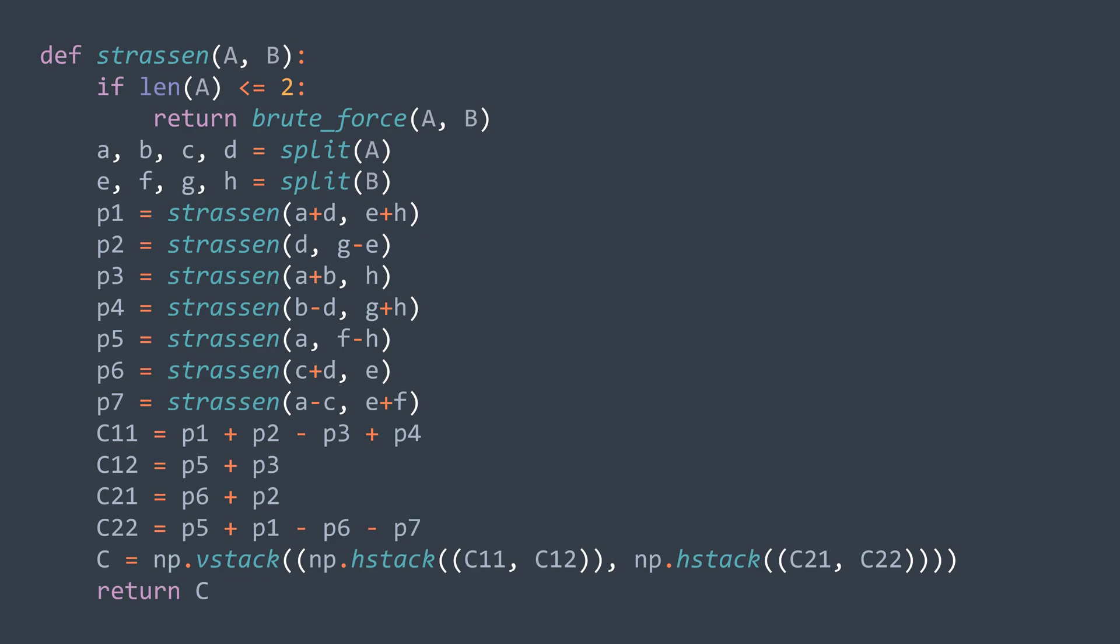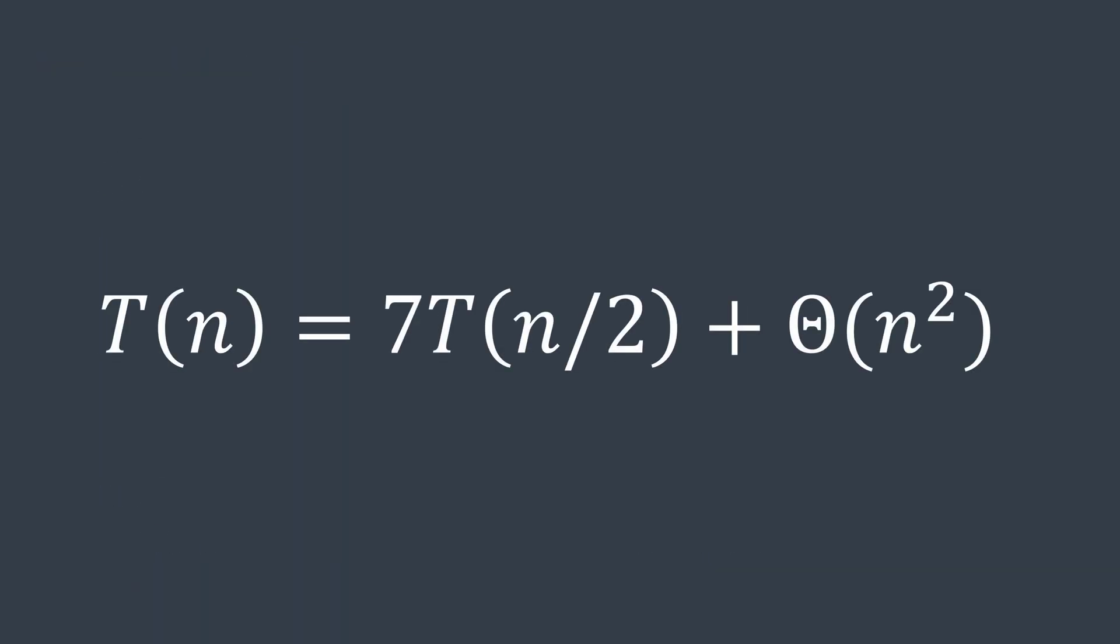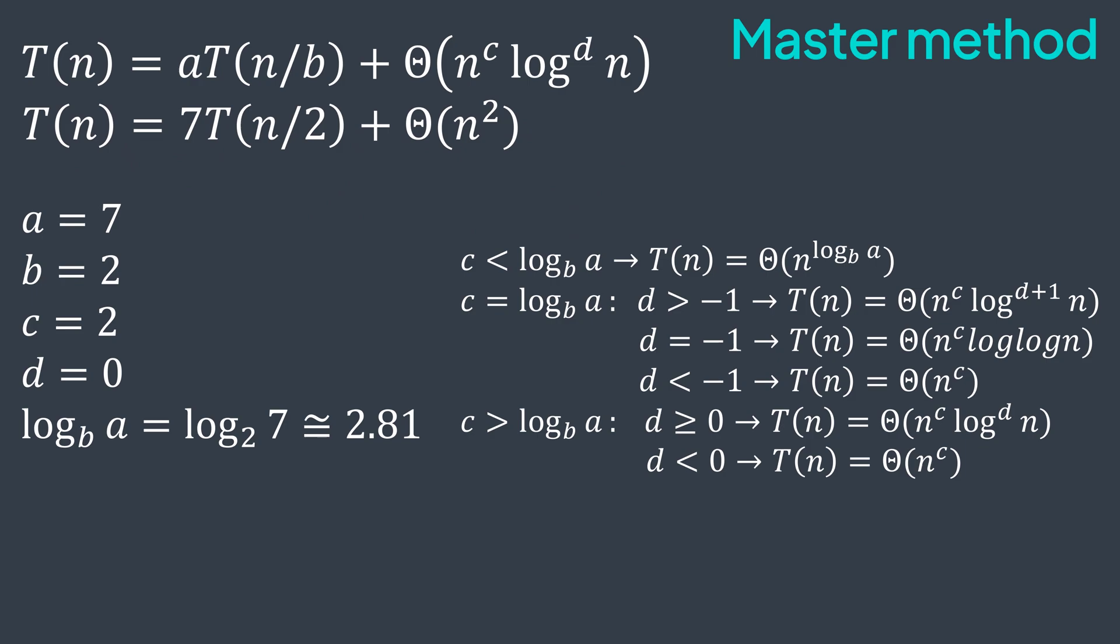For the time complexity, this time we call the function seven times only instead of eight. We have T(n) equal to 7 times T(n/2) plus theta of n squared. By using the master method, a is 7, b is 2, c is 2, and d is 0. log_b of a is log_2 of 7, which is around 2.81, is greater than c. So T(n) is theta of n power log_b of a, which is theta of n power 2.81, asymptotically better than theta of n cubed.